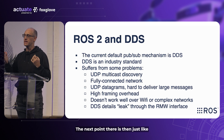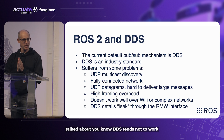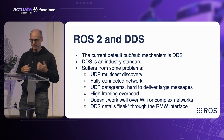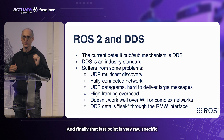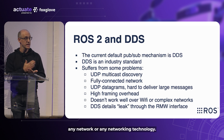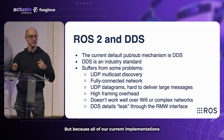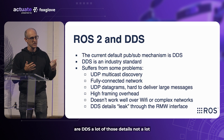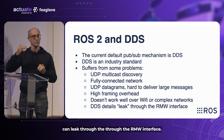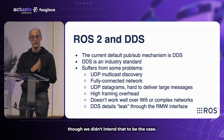The next point is essentially a combination of all the above. Because of all those problems, DDS tends not to work that well over Wi-Fi or complex networks. And finally, that last point is very ROS-specific: the RMW C API is meant to be abstract and usable for any networking technology, but because all our current implementations are DDS, DDS details can leak through the RMW interface, making the RMW API become very DDS-like even though we didn't intend that.